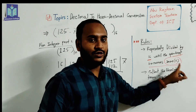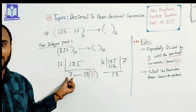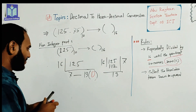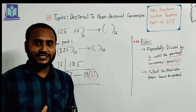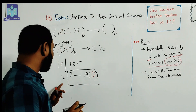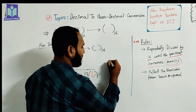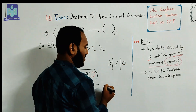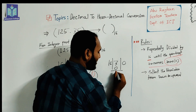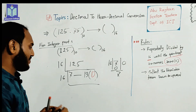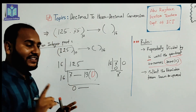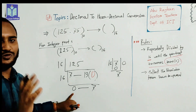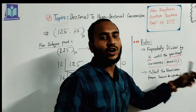Since the quotient is not yet zero, we have to divide again by base 16. Now dividing 7 by 16 is not possible as a whole number, so the quotient equals 0. That gives us 16 × 0 = 0, and the remainder is 7. We want to terminate the process here, so we collect the remainder from downward to upward.